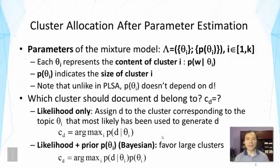And in this case, we're going to choose the theta that has a large p of theta i, that means a large cluster, and also a high probability of generating d. So we're going to favor a cluster that's large and also consistent with the document. And that intuitively makes sense because the chance of a document being in a large cluster is generally higher than in a small cluster. So this means once we can estimate the parameters of the model, then we can easily solve the problem of document clustering.